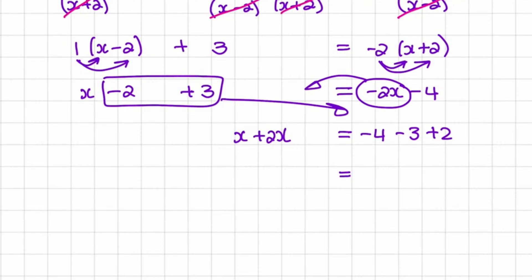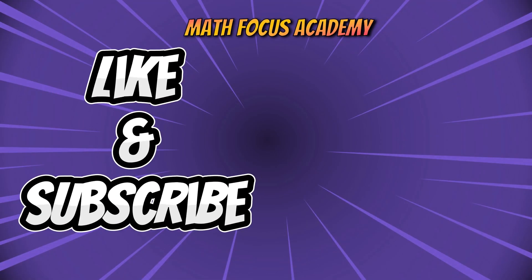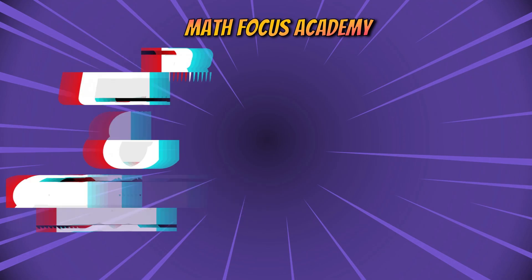On the left, we'll have x plus 2x, which is 3x because they are like terms. And on the right, we'll have negative 4 minus 3, which is negative 7, plus 2, which equals negative 5. Now I divide both sides by 3 to get x alone, so x equals negative 5 over 3.